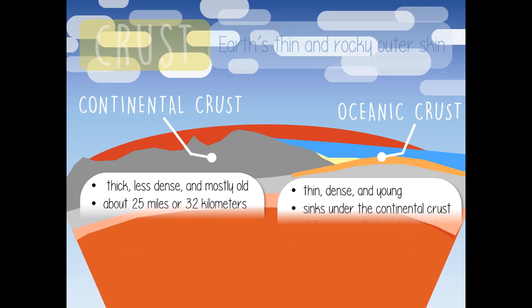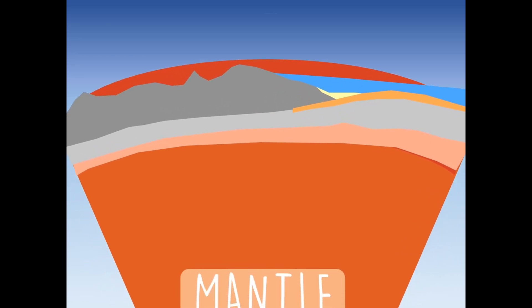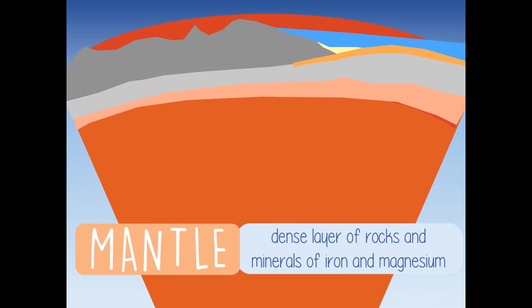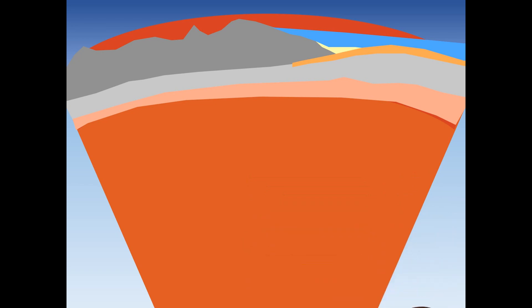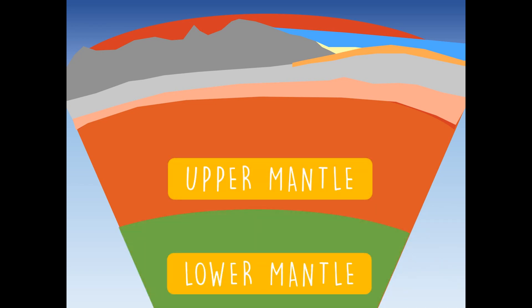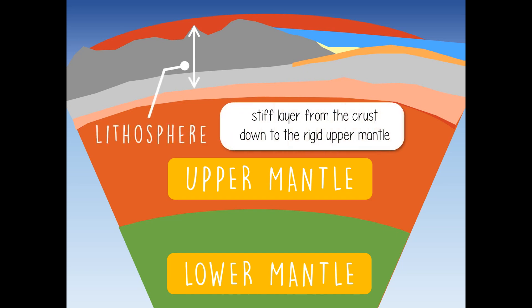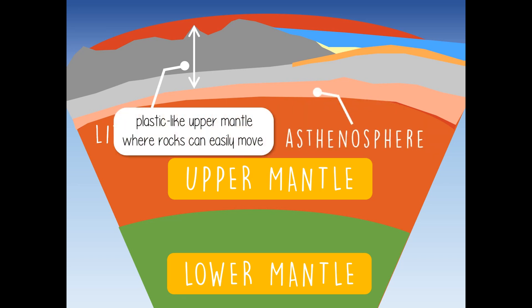Under the crust is the mantle — a dense layer of rocks and minerals of iron and magnesium. Since there are differences in pressure and composition in the mantle, it is divided into two layers: the upper and lower mantle. The upper mantle is split into two: the lithosphere, which is the stiff layer from the crust down to the rigid upper mantle, and the asthenosphere, the plastic-like upper mantle where rocks can easily move.